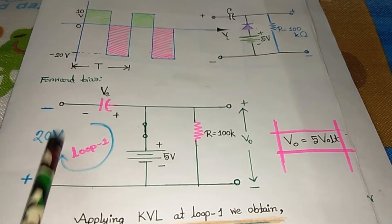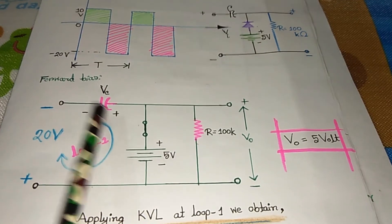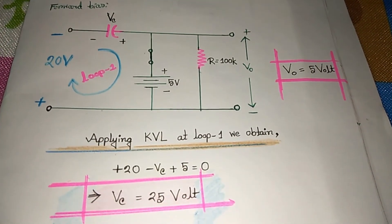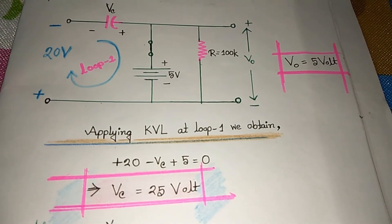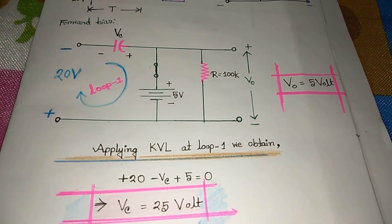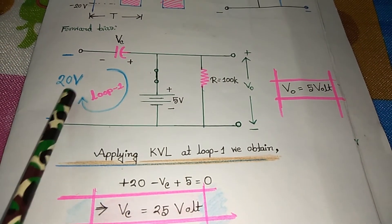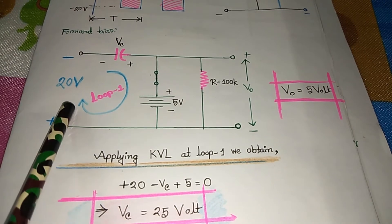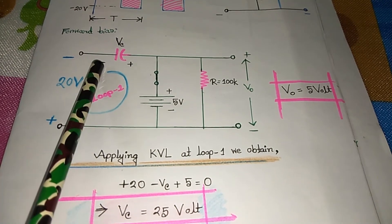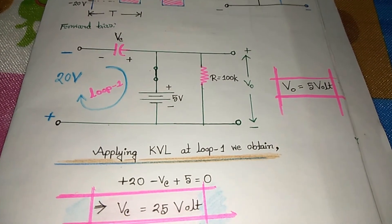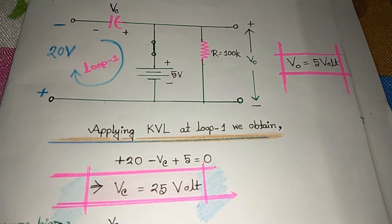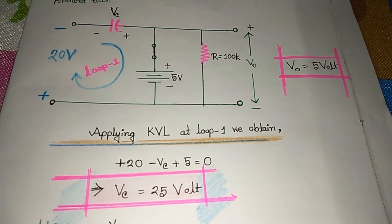Applying KVL, we can easily find out the VC value. Applying KVL at loop 1, we obtain: plus 20 — because we are entering from the positive terminal — minus VC plus 5 equals 0. Finally we get the value of VC = 25 volts.